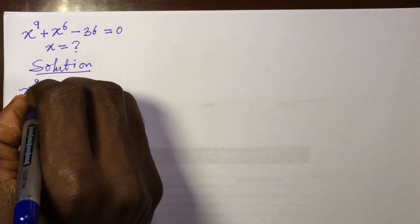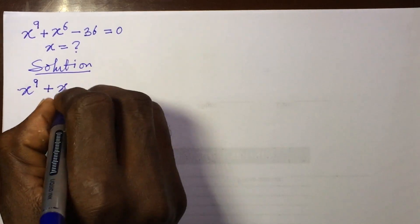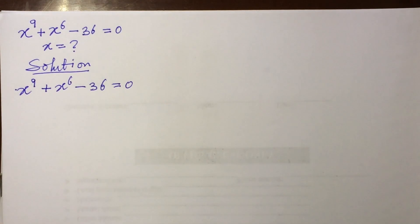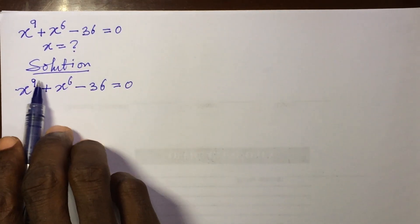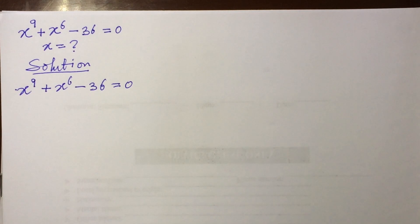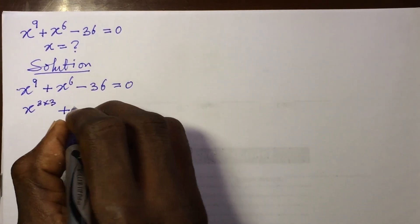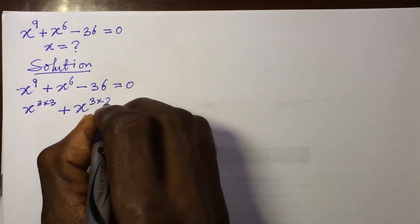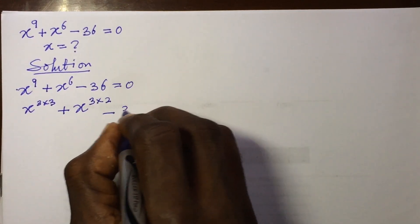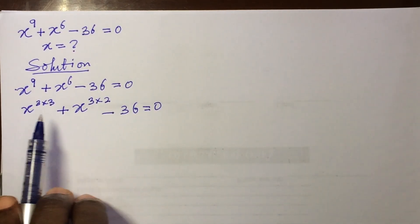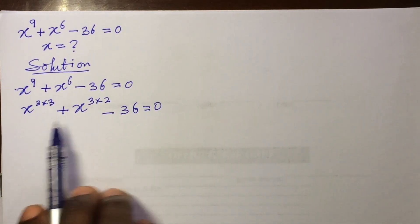The question says: x to the power of 9 plus x to the power of 6 minus 36 equals 0. If you look carefully, we can express the powers as a product of prime factors. So this can also be written as x to the power of 3×3, plus x to the power of 3×2, minus 36, equals 0.